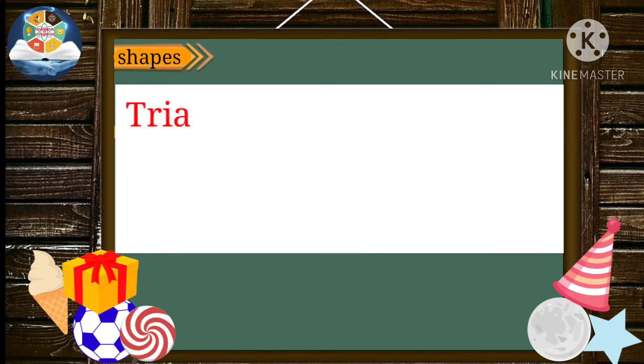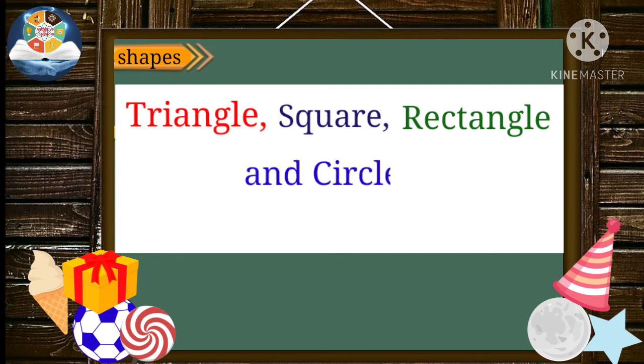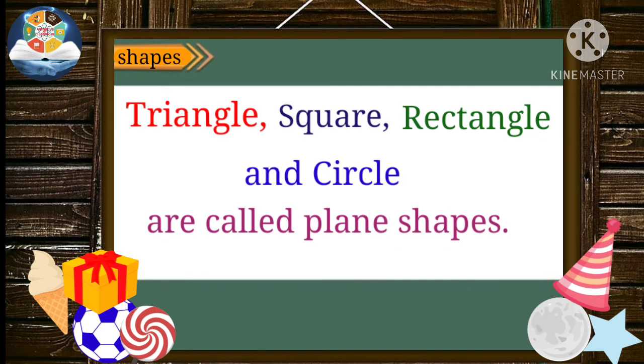One more thing I would like to tell you. Shapes like triangle, square, rectangle and circle are called plain shapes, because each one of these can be drawn on plain paper.